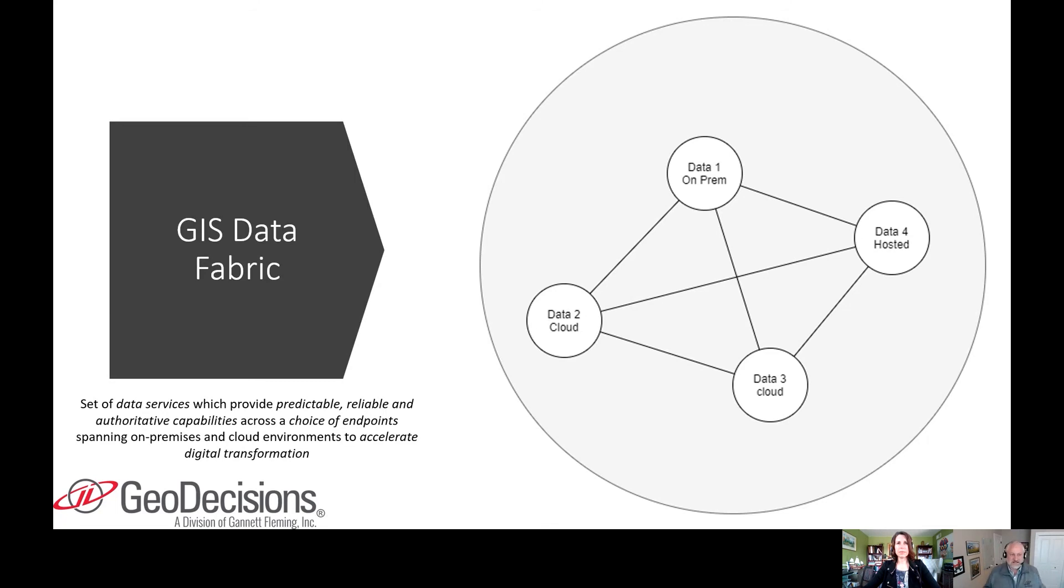So a set of data services—data services are REST endpoints. If you're using Esri products and ArcGIS Online, you're natively using those REST services that come in the form of JSON, GeoJSON. So those are your data services.